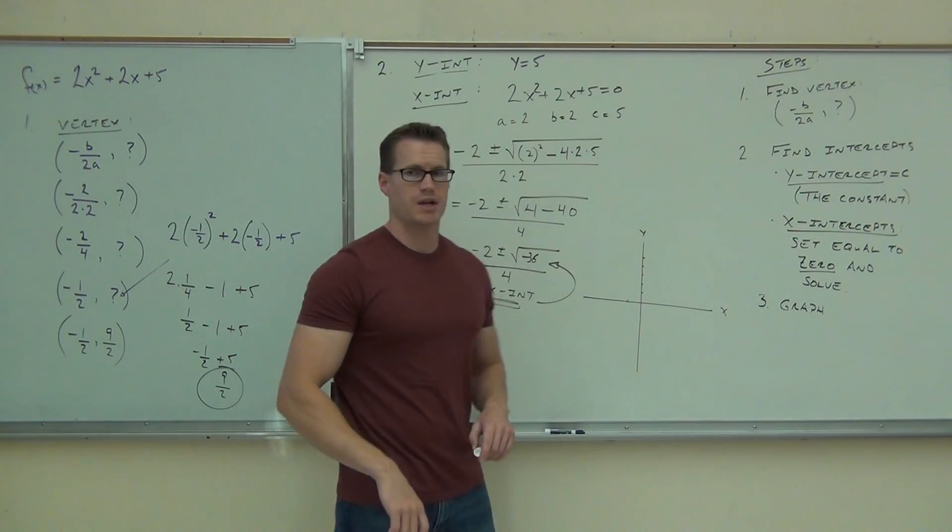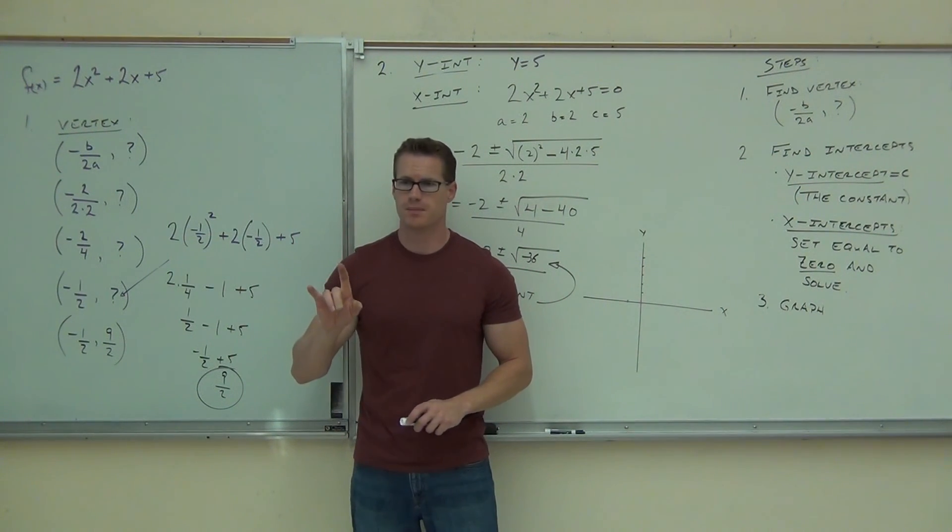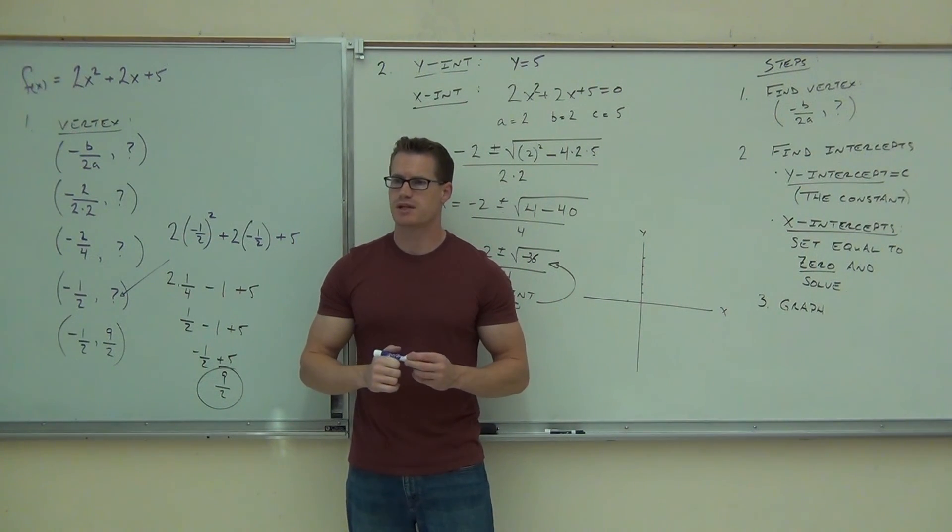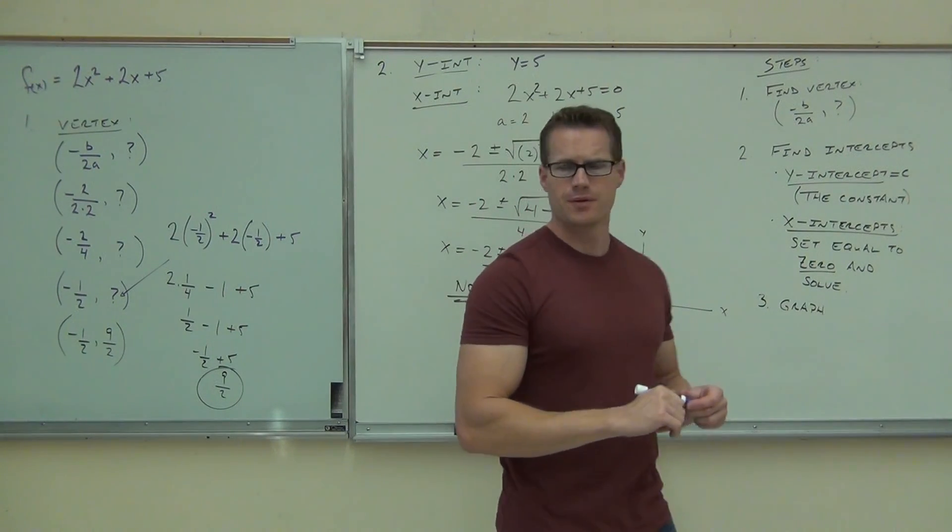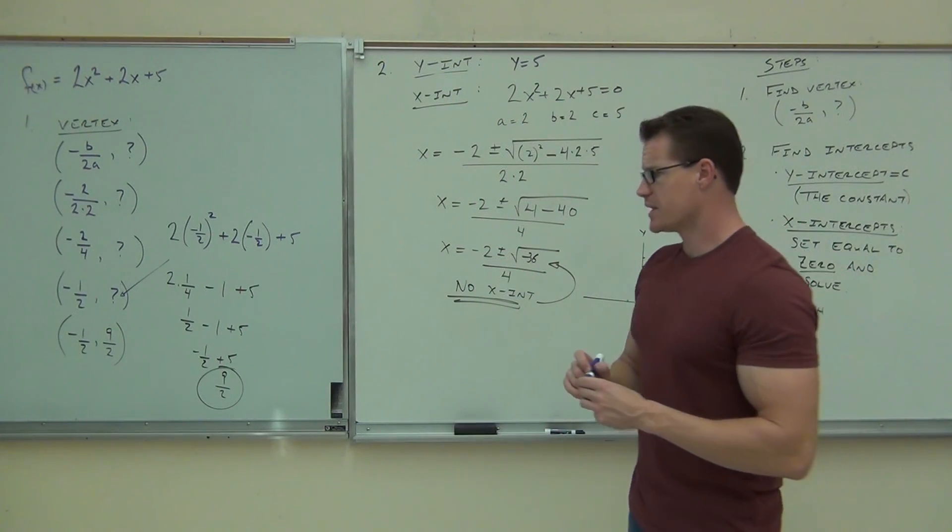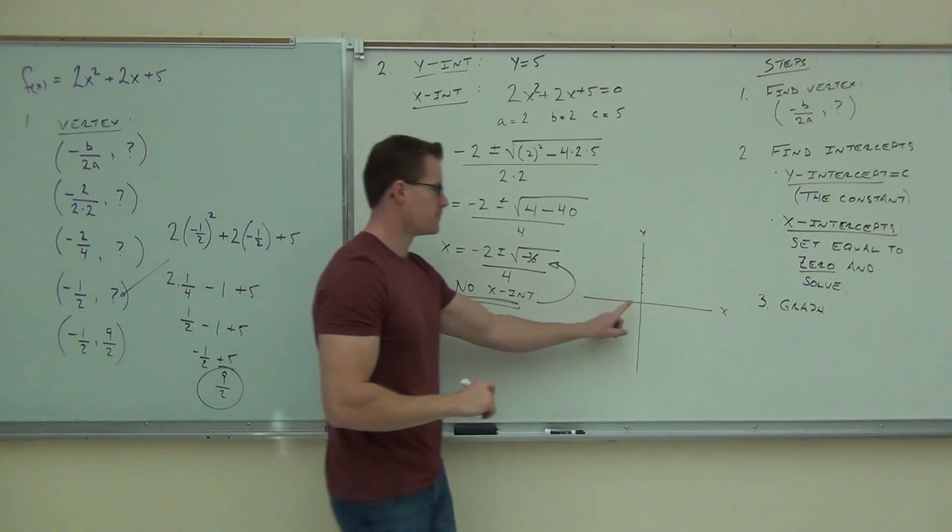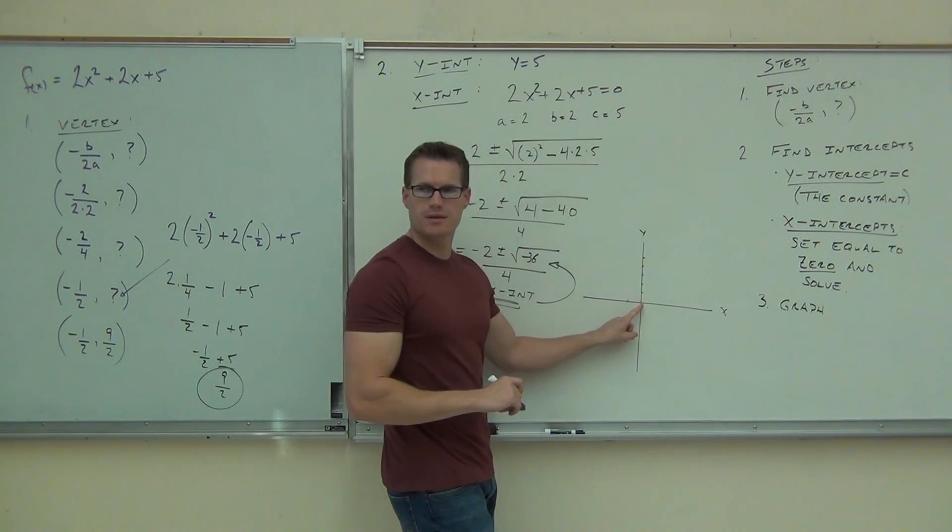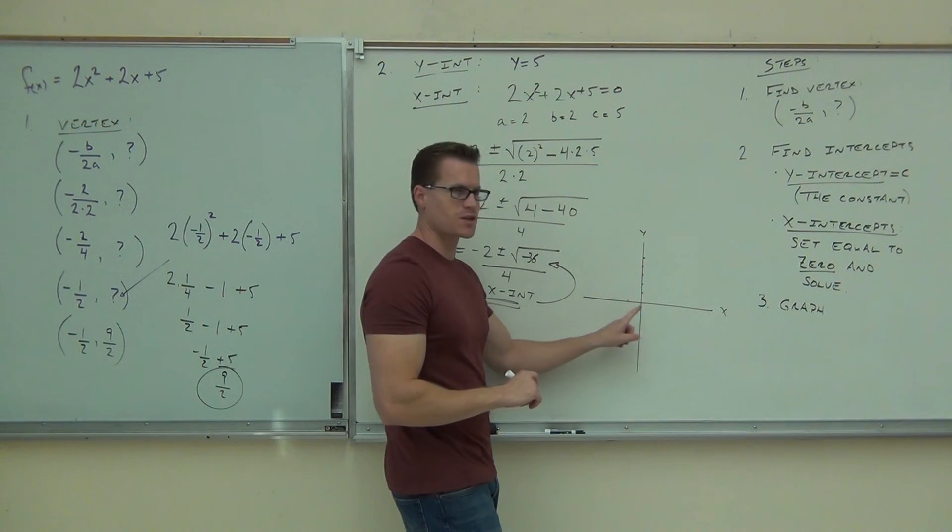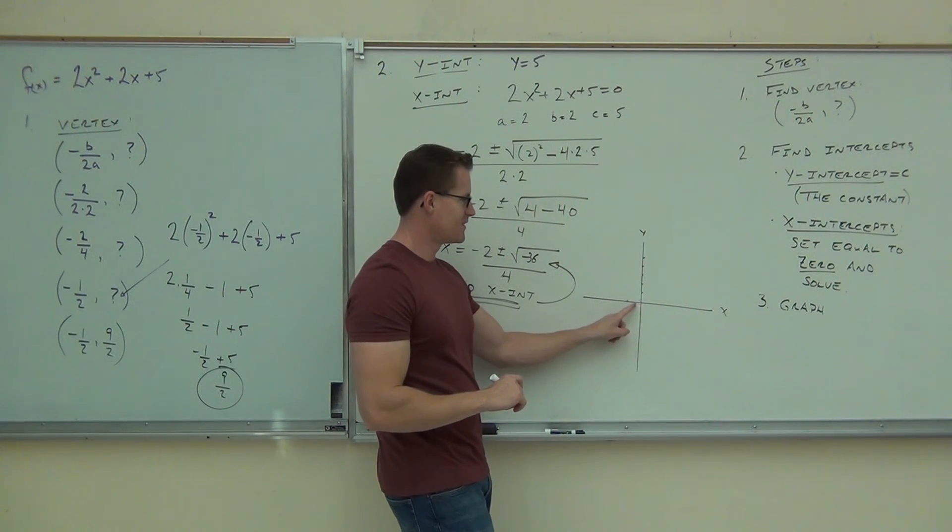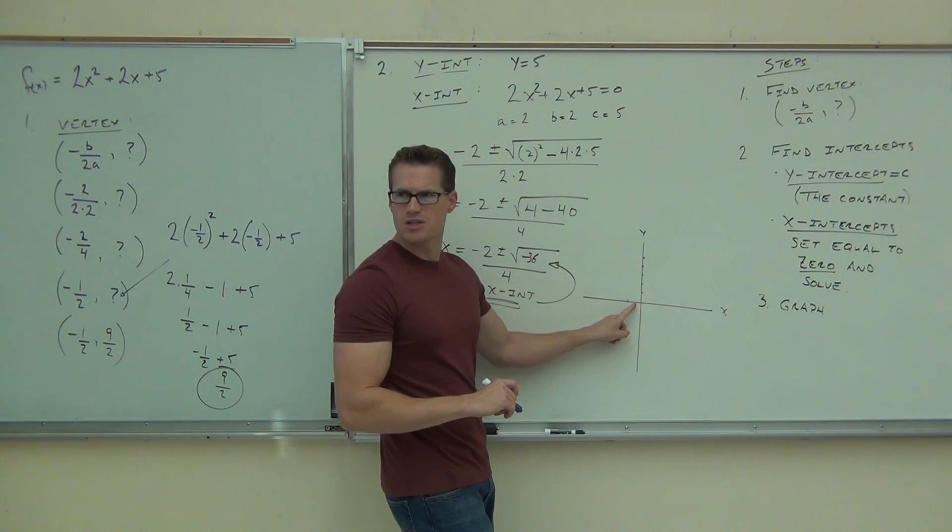This is really just going to have two points that we're going to be able to graph this with. Only two. So first thing we do is graph our vertex. Our vertex is at negative one-half, comma nine-halves. You tell me how to get to negative one-half. Where do I go, left or right? Left. Stop me when I get there. Are you ready? So right in the middle. That's negative one-half. Now, nine-halves. How much is nine-halves?